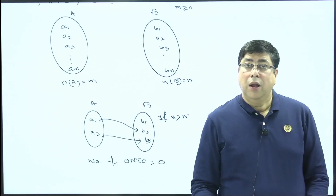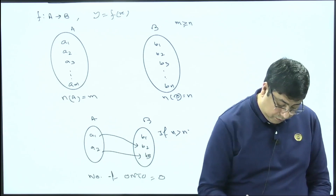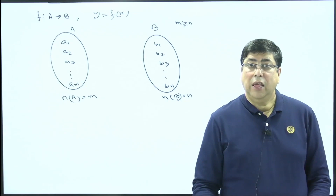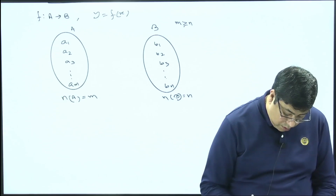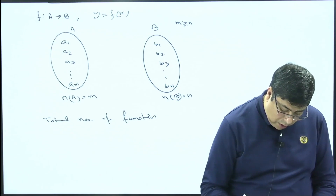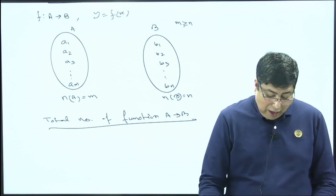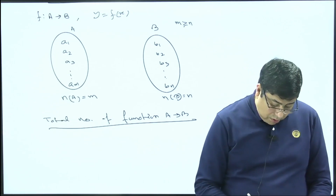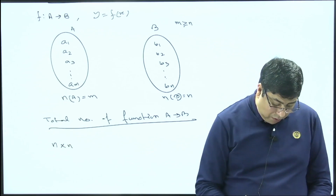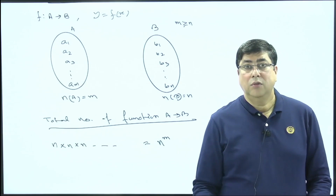We are finding the total number of onto mappings when m ≥ n. First, count the total number of functions from set A to set B. Element A1 has n choices, A2 has n choices, and so on for all m elements. So the total number of functions from set A to set B is n^m.